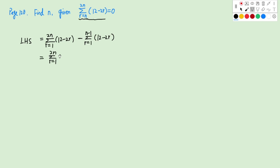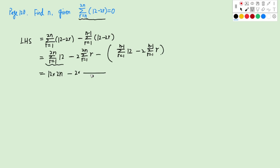We can expand the brackets: sigma R from 1 to 2N of (12 minus 2R), minus sigma R from 1 to N minus 1 of (12 minus 2R). So we have 12 times 2N, and for the second term we use the formula: 2 times (1 plus ... plus 2N) in total 2N terms, minus 12 times (N minus 1) terms, minus 2 times the sum from 1 to N minus 1. So now we expand the brackets.